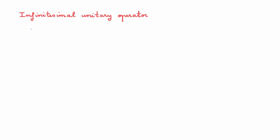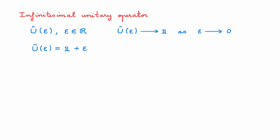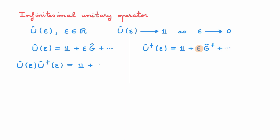The final thing I want to discuss is the infinitesimal unitary operator. We consider a unitary operator U that depends on a small real parameter ε, and we say that U(ε) is an infinitesimal operator, meaning U(ε) tends to the identity as ε tends to 0. We can expand U(ε) in a power series: U(ε) = I + εG + ..., and similarly U†(ε) = I + εG† + .... Calculating U(ε)U†(ε) and using the expansions, we get the identity plus ε(G + G†) plus higher-order terms in ε.